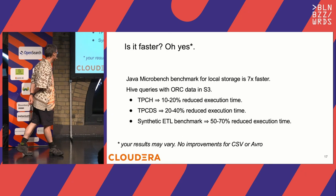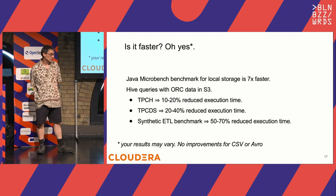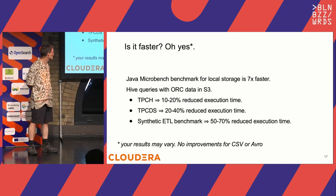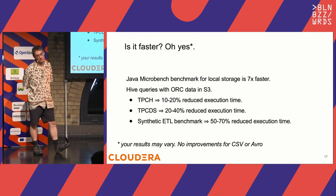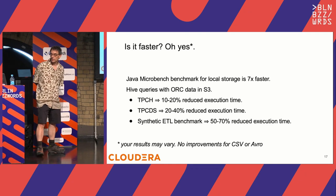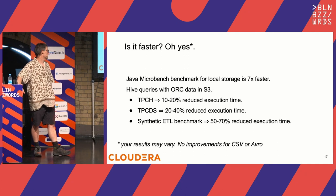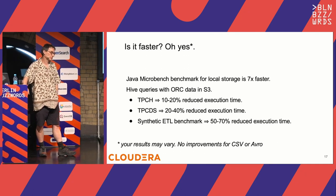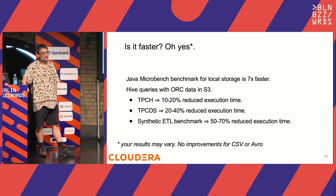Does it actually make things faster? Oh yes, it does. We validated this. First we did benchmarks using the Java Microbenchmark Framework against the local file system, getting about a 7x speedup — just because we have an SSD-optimized API. When running with ORC on S3, we are seeing really good speedups, significant enough to say: if you can do this, you should do it.